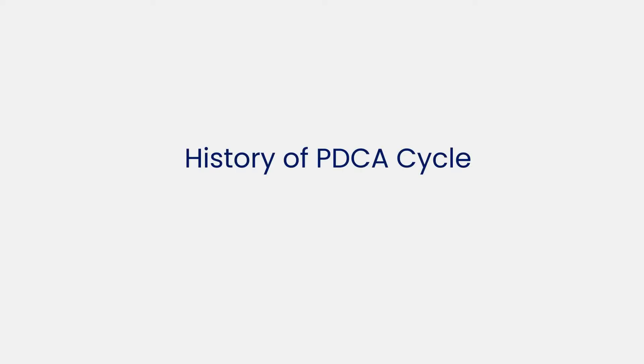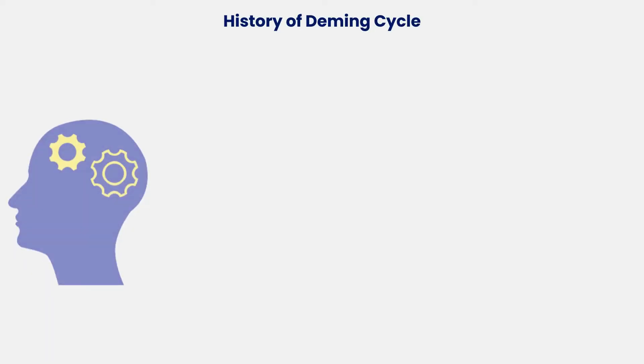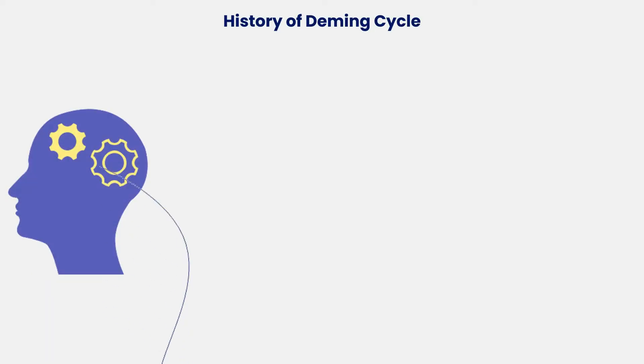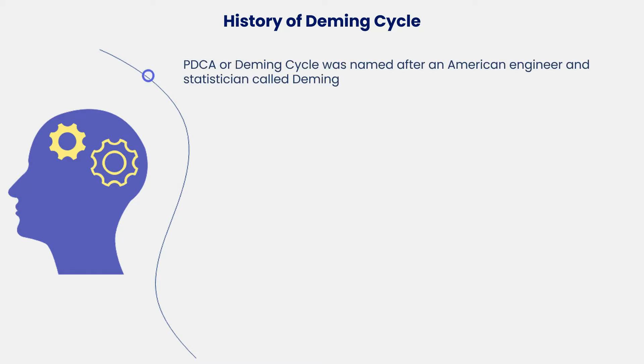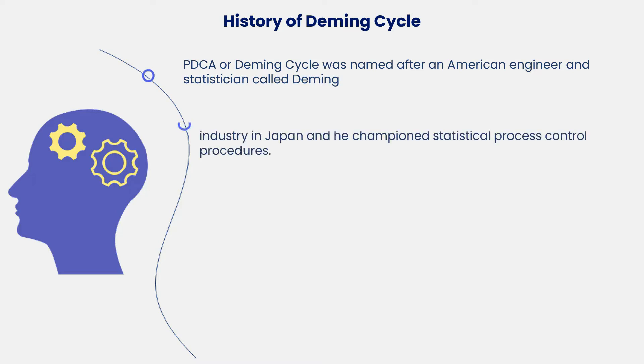Now let's learn more about the history of the PDCA cycle. The PDCA, or Deming Cycle, was named after the American engineer and statistician Dr. W. Edwards Deming. After the Second World War, he was known for his work in the auto industry in Japan, and he championed statistical process control procedures.